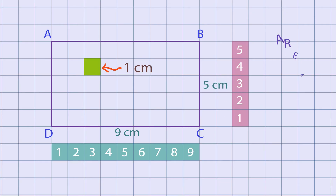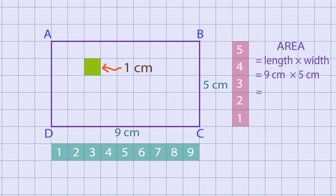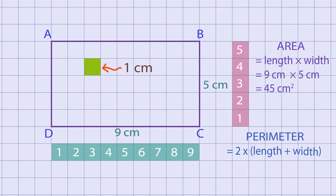As we know, area equals length times width. So, 9 cm into 5 cm equals 45 cm². And as the perimeter equals 2 into (length plus width), here the perimeter equals 2 into (9 cm plus 5 cm), equals 28 cm.